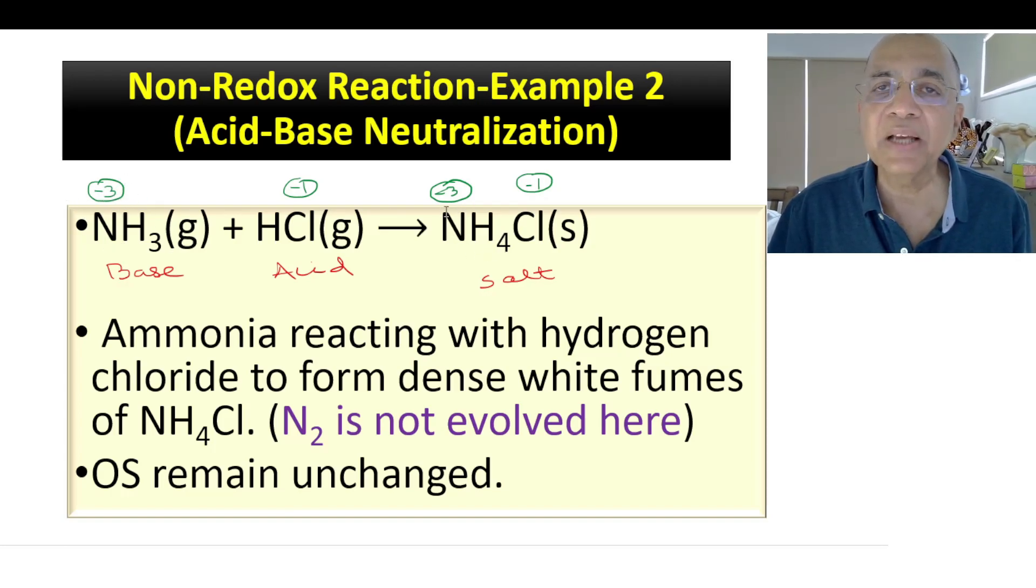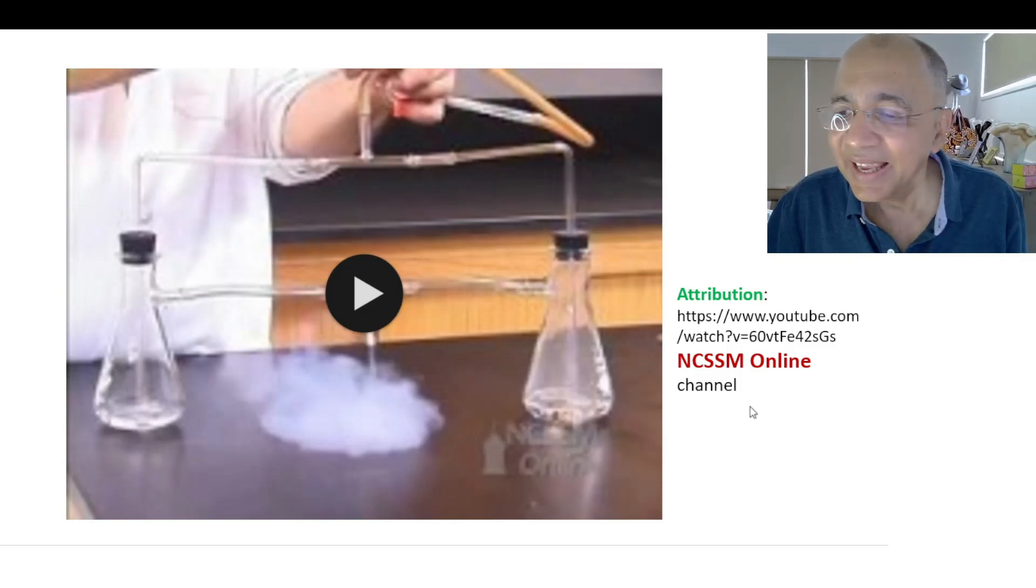So here the oxidation number of any element you find, there will be no change at all. Nitrogen is -3 here, nitrogen is also -3 here. If you do not know how to find the oxidation number, you wait for my next video. Just wait for my next video. So here chloride -1, -1, no change in oxidation number. So this is a non-redox reaction, and here there is no evolution of nitrogen gas. So that in the previous reaction nitrogen gas was evolved and that was responsible to expel ammonium chloride fast.